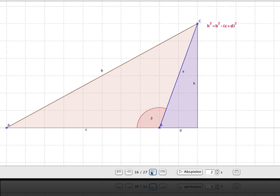Now if we take a look at the blue triangle we see d² + h² = a² or h² = a² - d².